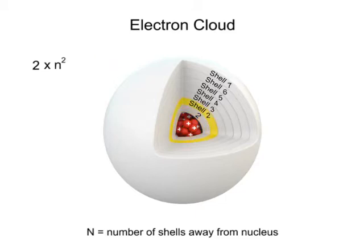For the second shell, it would be 2 times 2 squared, or 2 times 4, to give 8 electrons.